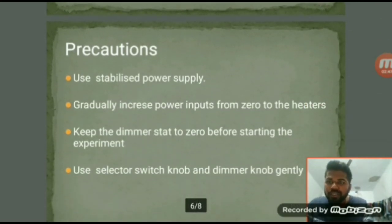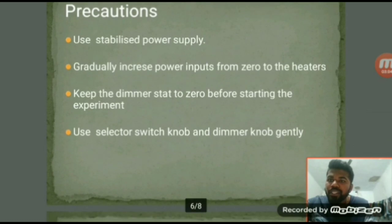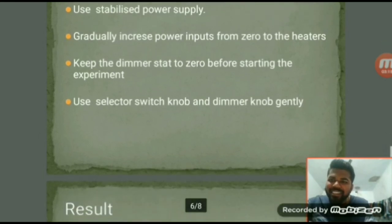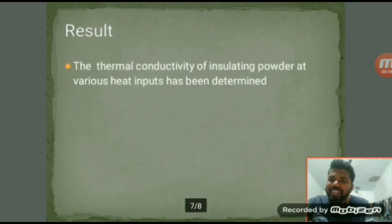Precautions. We should use a stabilized power supply. We should not give directly a large amount of heat supply or power input. If the temperature is drastically increased, the insulating material inside the sphere may be damaged. Keep the rheostat to zero before starting the experiment. Use the selector switch knob and rheostat knob gently to prevent damage.